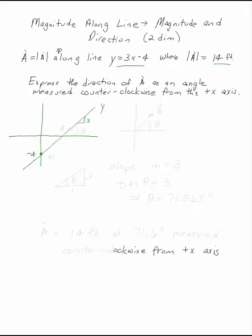We're told that A has a magnitude 14 and points up along this line. So that's the direction of A.